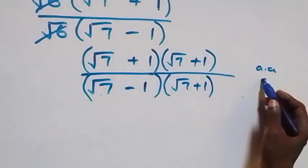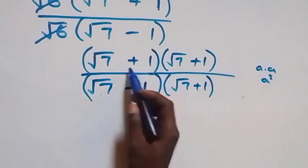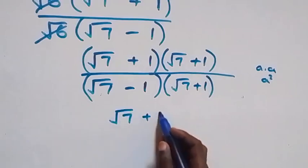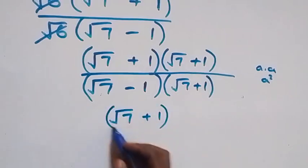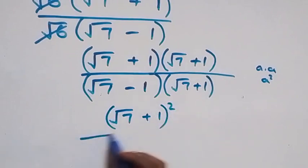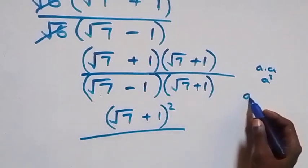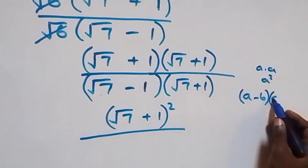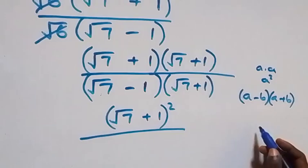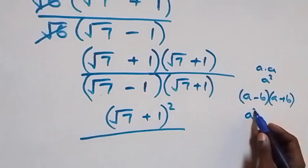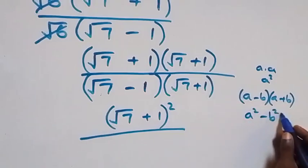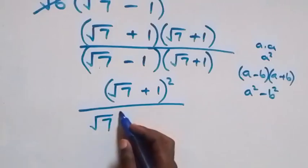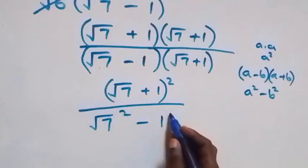This follows from a times a which is a squared — the brackets are the same — so we have (root 7 plus 1) all squared in the numerator. The denominator follows from (a minus b)(a plus b) which equals a squared minus b squared, giving us root 7 squared minus 1 squared.